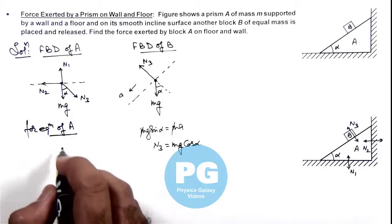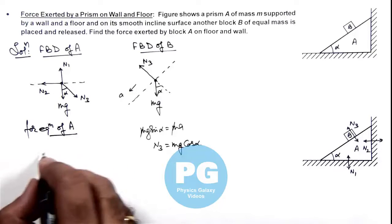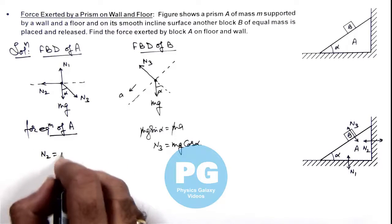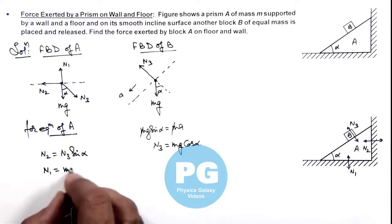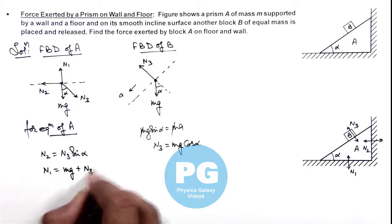Here we can balance the forces, so this will give us N2 is equal to N3 sine alpha, and the value of N1 is equal to mg plus N3 cos alpha.